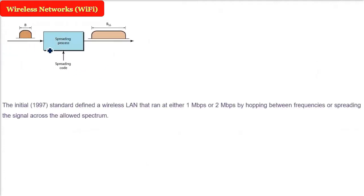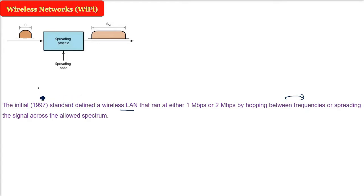The initial 1997 802.11 standard defined a wireless LAN running at 1 Mbps or 2 Mbps. It used frequency hopping — changing from one frequency to another — and spread spectrum, meaning the whole assigned spectrum is used by spreading the signal across the allowed spectrum.